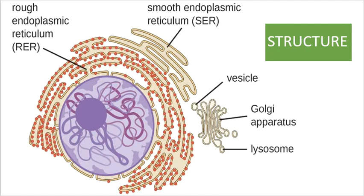The endoplasmic reticulum is a name derived from the fact that in a light microscope it looks like a net of cytoplasm — it is more like a net in the cytoplasm, as you can see in the picture. The endoplasmic reticulum is an organelle present only in eukaryotic cells and not in prokaryotes.